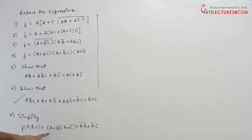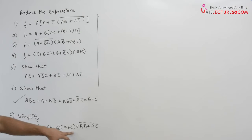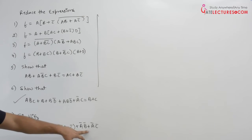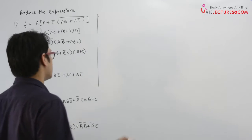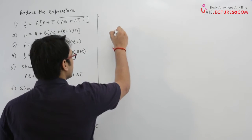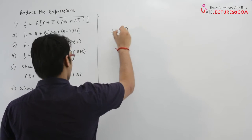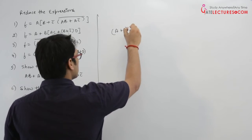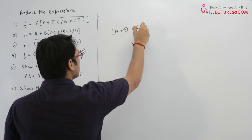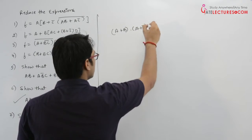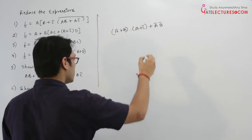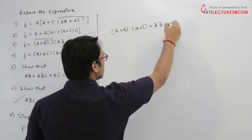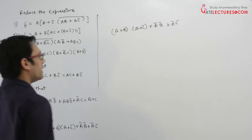The last question says simplify (a plus b) dot (a plus c complement) plus a complement b complement plus a complement c complement. So it is (a plus b) dot (a plus c complement) plus a complement b complement plus a complement c complement.